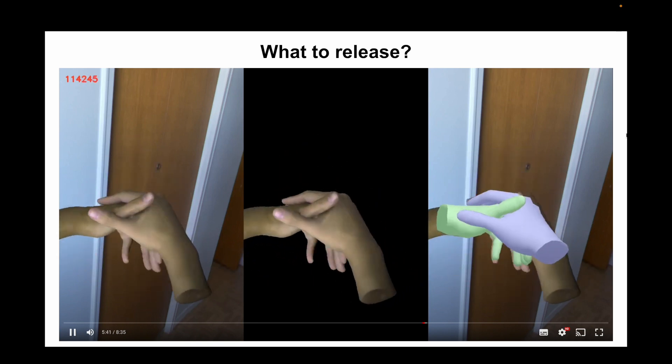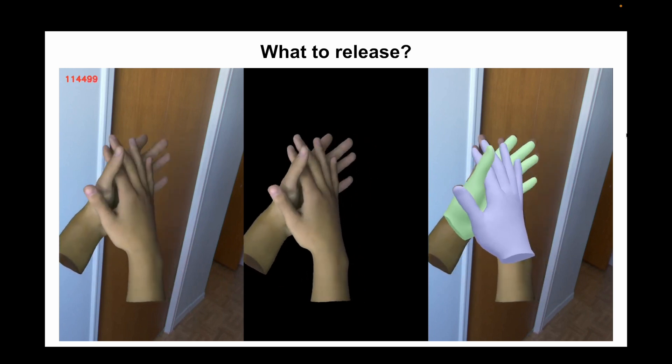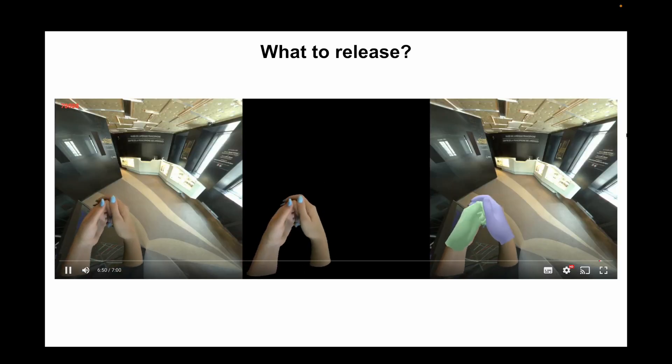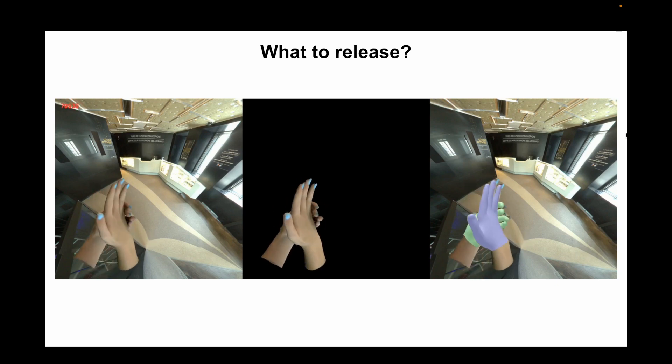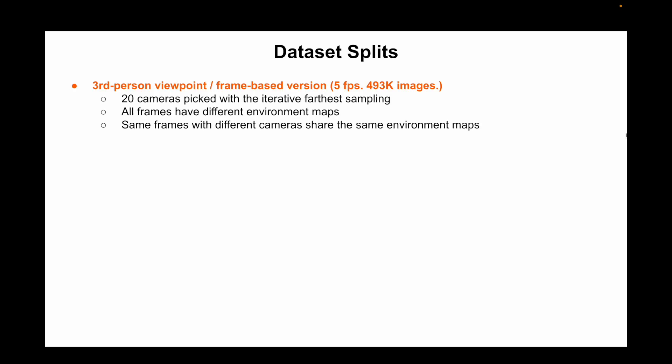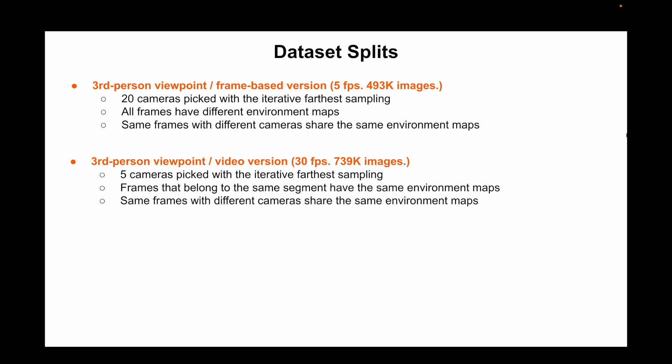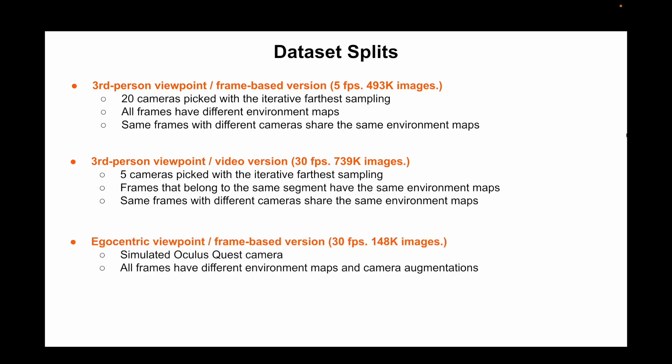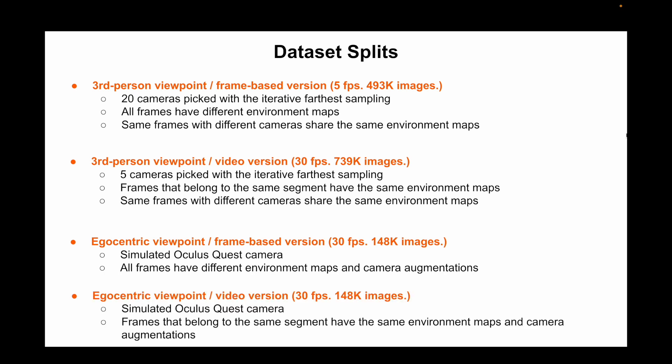We released three items: relit images, foreground masks, and 3D ground truth. There are multiple splits: the first provides images rendered from third-person viewpoints with a different environmental map per frame for high diversity; the second provides third-person viewpoint images where frames in the same segment share an environmental map, ensuring temporal consistency suitable for video-based research; the third provides egocentric viewpoint images with a different environmental map per frame; and the fourth is the same egocentric viewpoint but with consistent environmental maps per segment.